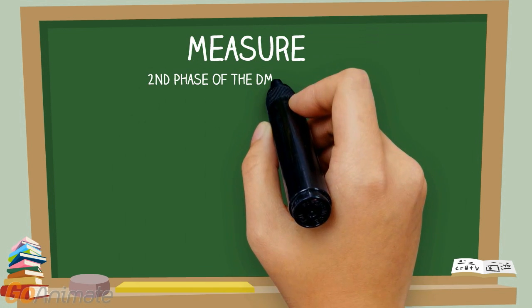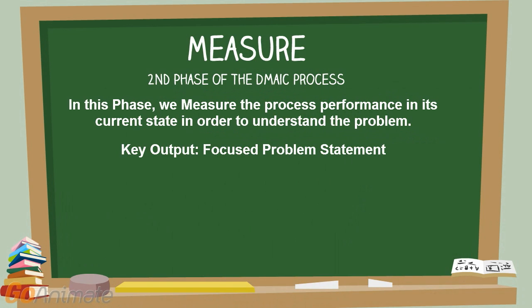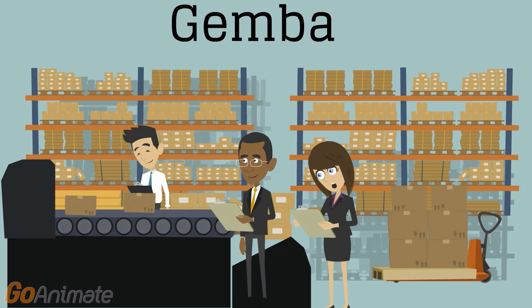Measure is the second phase of the DMAIC process. In this phase, we measure the process performance in its current state in order to understand the problem. The key output is a focused problem statement. Through data stratification, we are able to determine which areas of the process need to be analyzed in the next phase. The Measure phase is 2 to 4 weeks in duration.